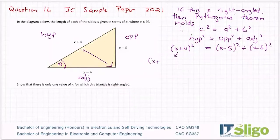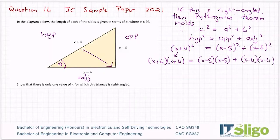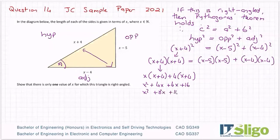So to square him, he's (x+4)(x+4). To square him, he's (x-5)(x-5). To square him, he's (x-4)(x-4). That's what squared means. It means itself by itself. Okay, so let's do this one first. So it's x by everything in the second bracket plus 4 by everything in the second bracket. x² + 4x + 4x + 16 or x² + 8x + 16.